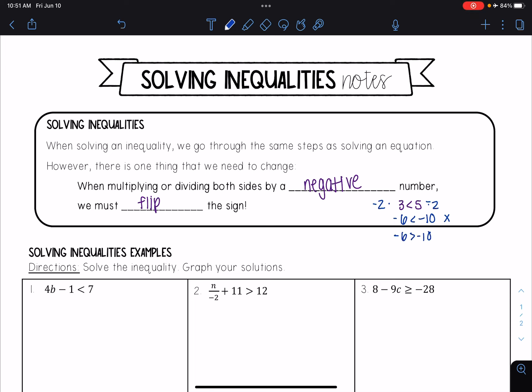And so that's why we have to flip the sign every time, because when we're multiplying by a negative number on both sides, it ends up creating a false statement unless we go ahead and flip that inequality. So we need to make sure that every time we are multiplying or dividing, we flip that sign.